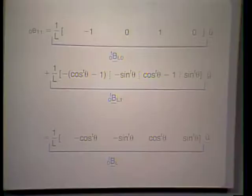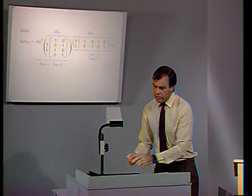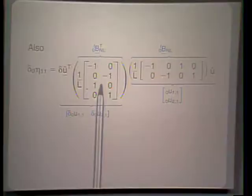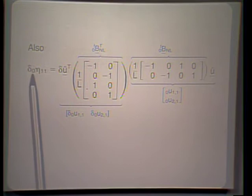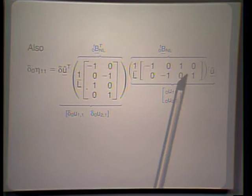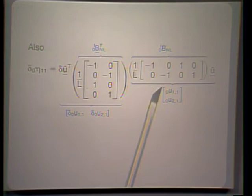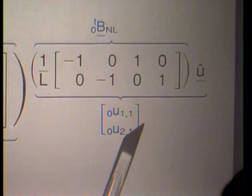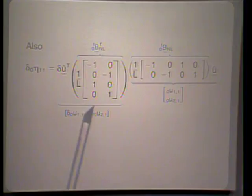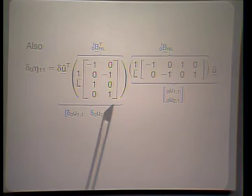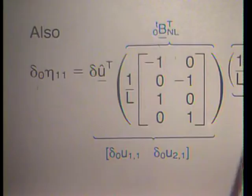We notice that in the linear strain displacement matrix, cosines and sines of angle theta appear — that is important to keep in mind. For the nonlinear strain displacement matrix, we look at the variation on the nonlinear strain term and substitute for the differentiations as we did for the updated Lagrangian formulation. We recognize that specific parts here are given by what is underlined in blue, and that part there is the nonlinear strain displacement matrix BNL.